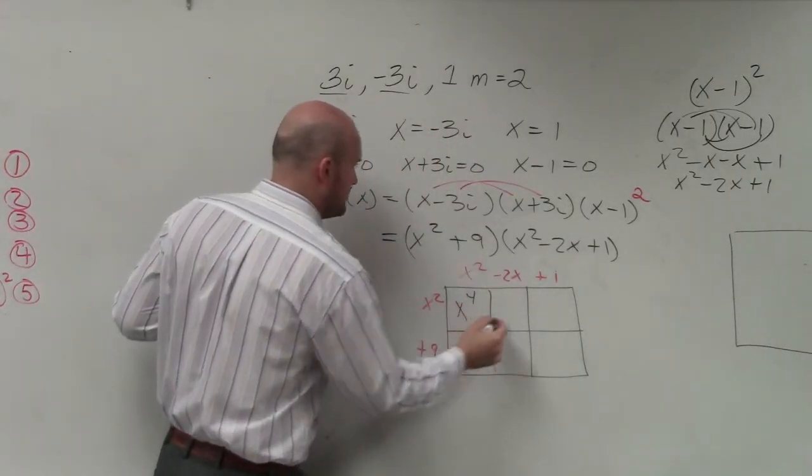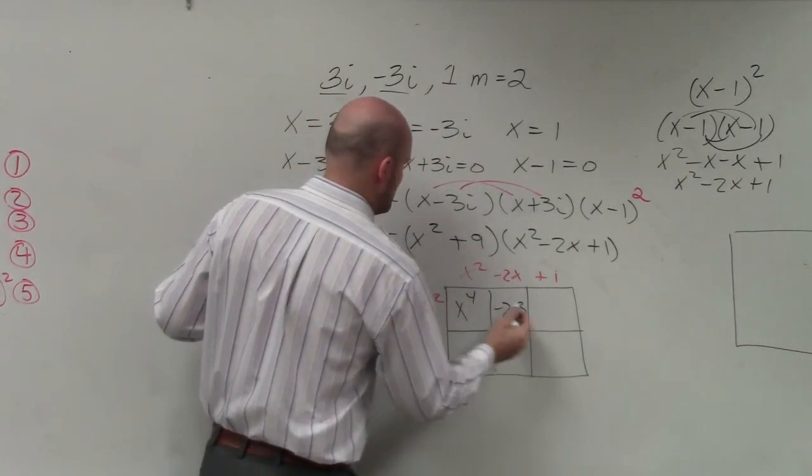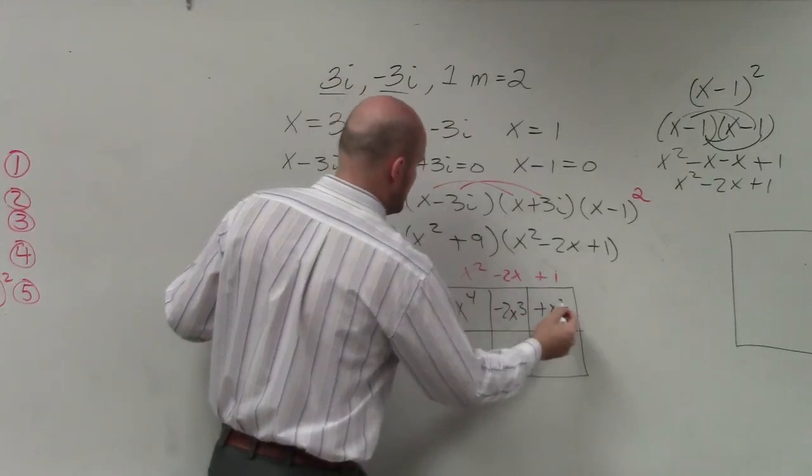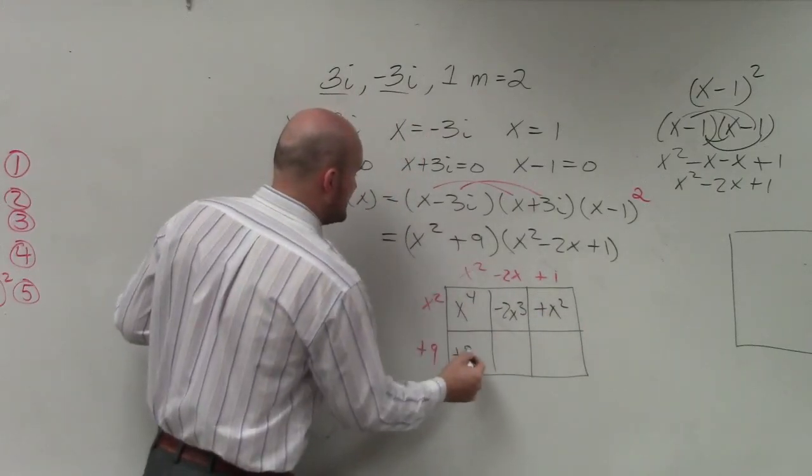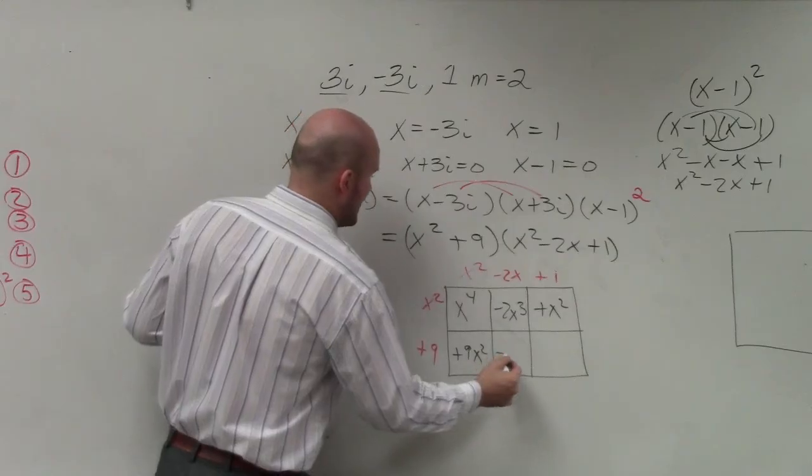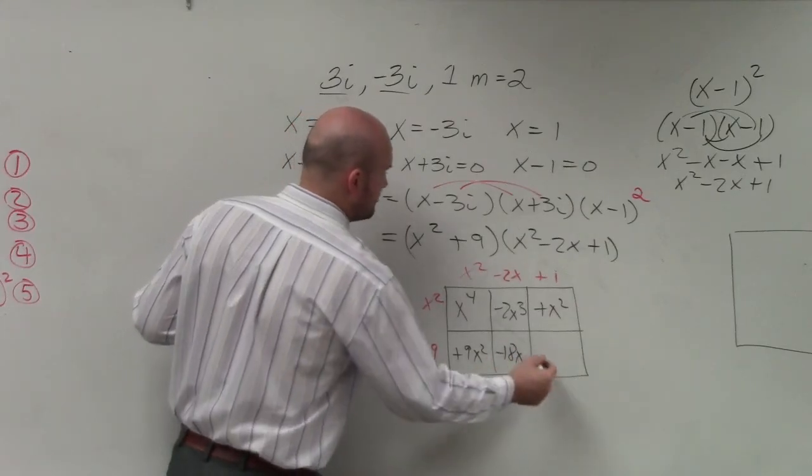So therefore, I get x to the fourth minus 2x cubed plus x squared plus 9x squared minus 18x plus 9.